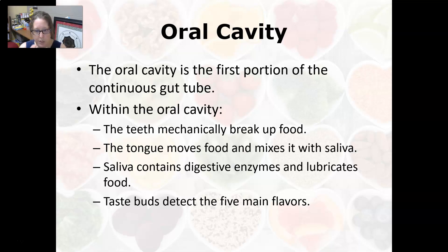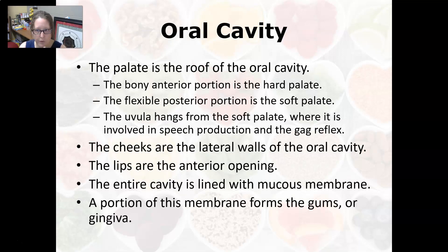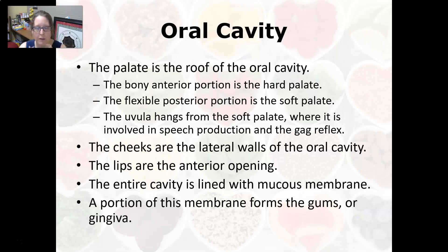The taste buds on your tongue detect the five main flavors: salty, sour, sweet, bitter, and umami, which is savory. The palate is the roof of the oral cavity — the bony anterior portion is the hard palate and the flexible portion at the back is the soft palate, with the uvula hanging from it, involved in speech production and the gag reflex. The cheeks are the lateral walls, the lips are the anterior opening, and the entire cavity is lined with mucous membrane. A portion of this membrane forms the gums, or gingiva.